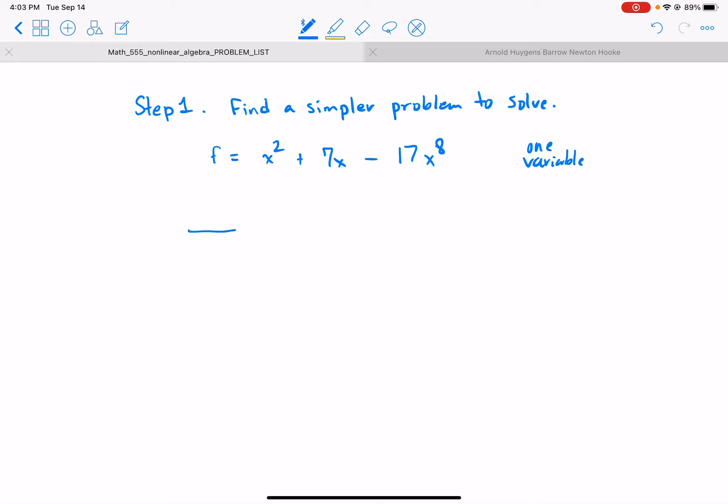x minus 17 x to the eighth. So in one variable I go to the real number line, and let's say this is zero, one, two, three, four, etc. five, six, seven, eight, nine. The Newton polytope is going to look at these exponents. I just circled an invisible one and then this is an eight.